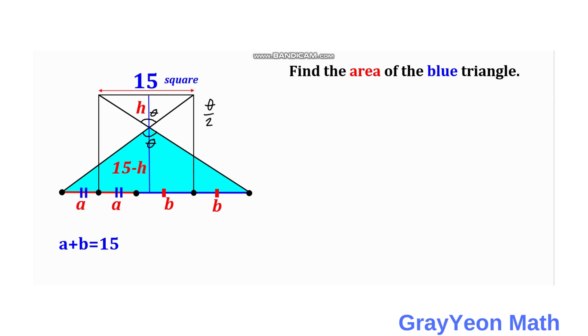And since we form a right triangle here because this angle is 90 and this angle is 90 also, this theta over 2, half of this vertical angle, should have a complement of this angle.